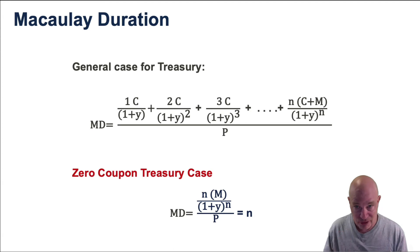As you would expect, if you're weighting the bond by its cash flows, there's only one cash flow. It's at the end for a zero-coupon bond. So its Macaulay duration is the maturity of the bond or the life of the bond.